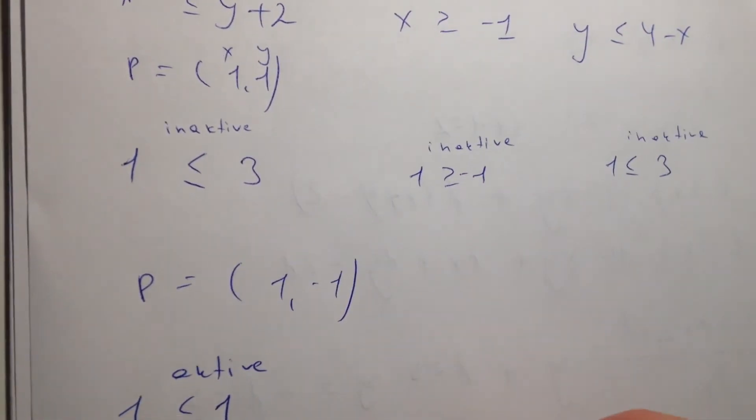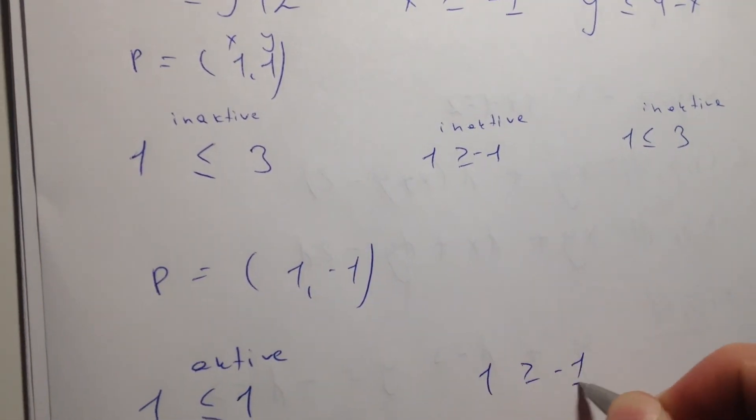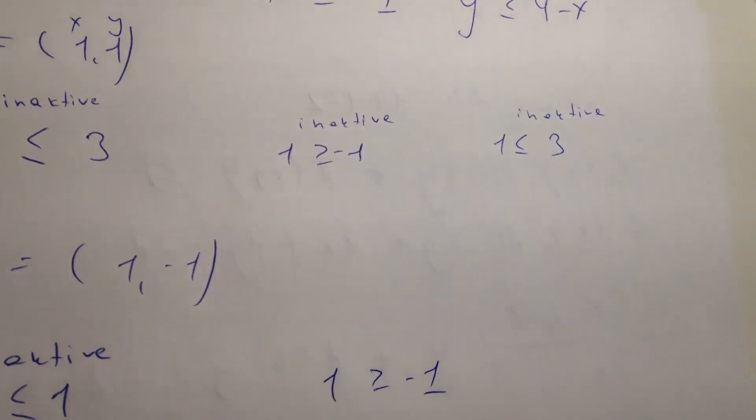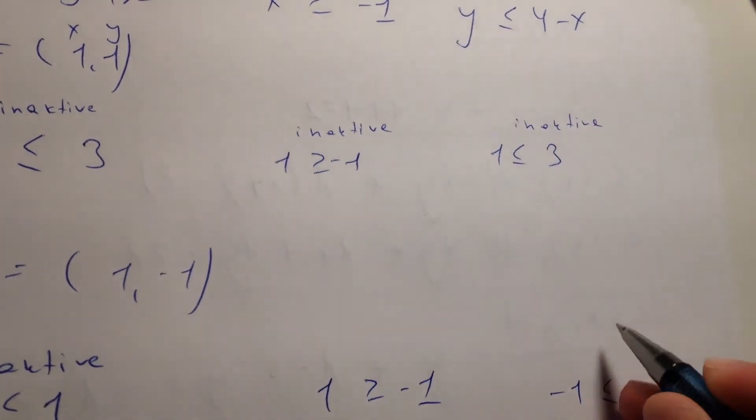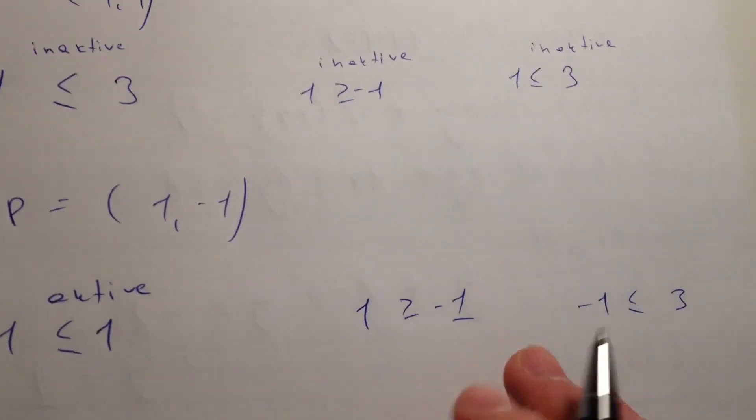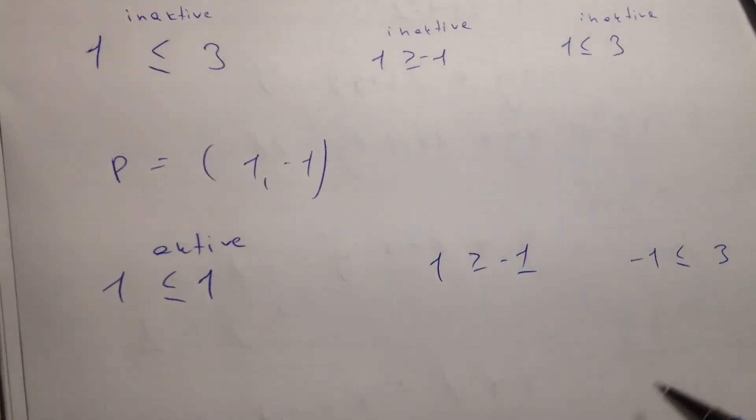The second is x is 1, bigger than minus 1, the same, it's inactive. But still the solution can be found. And minus 1 is less or equal to 3, and it also can be solved with these points, but it's also inactive.